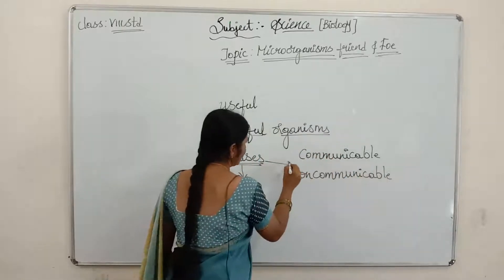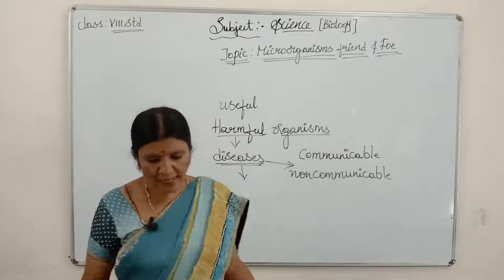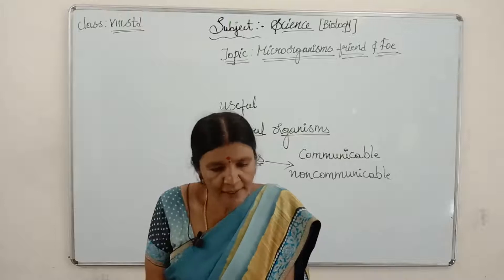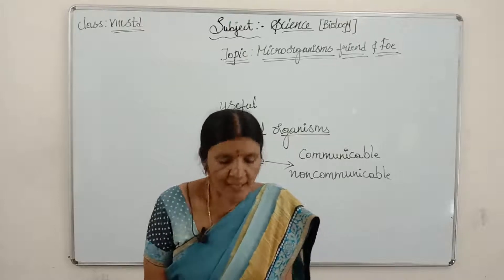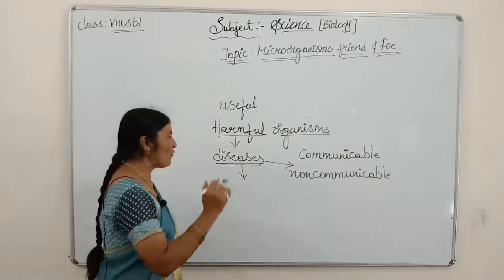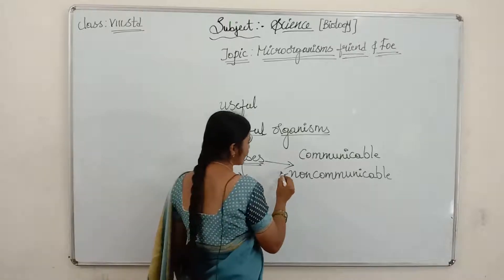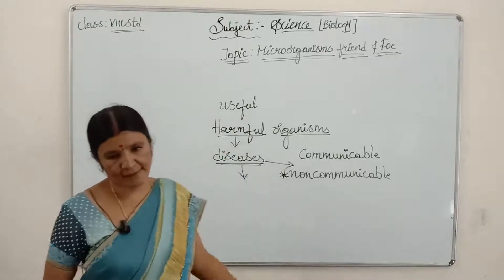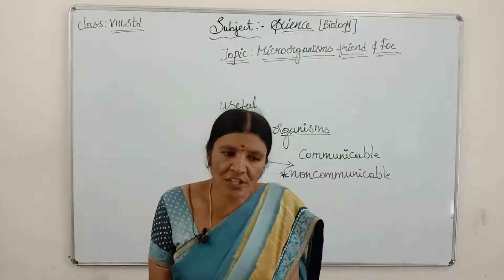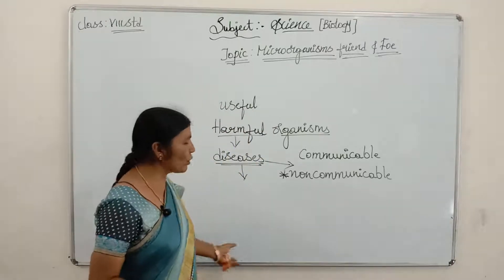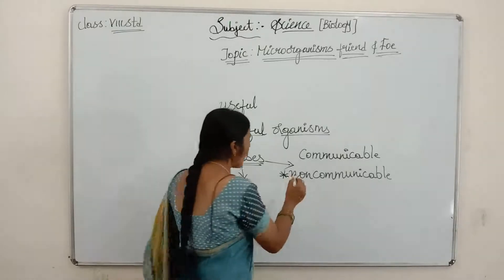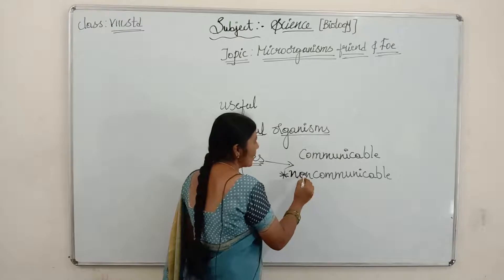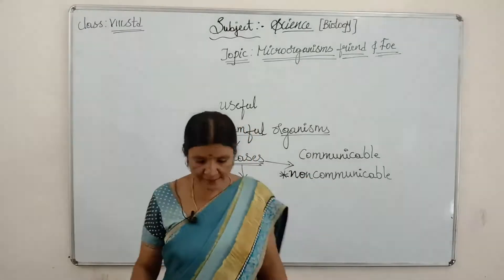There are two types of diseases — communicable diseases and non-communicable diseases. Diseases that do not spread from one person to another person are called non-communicable diseases.